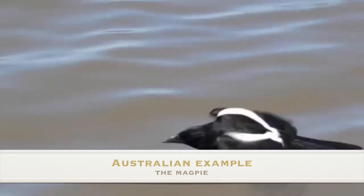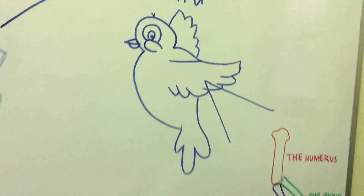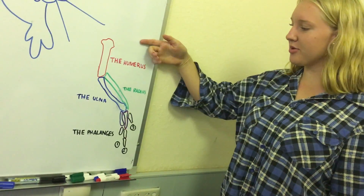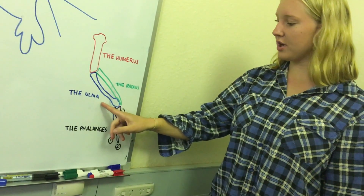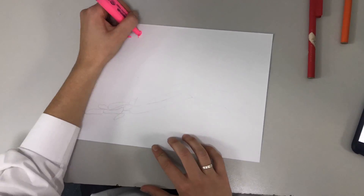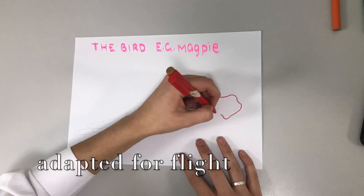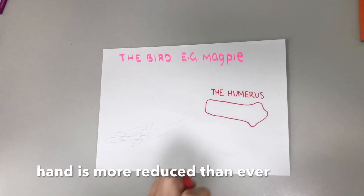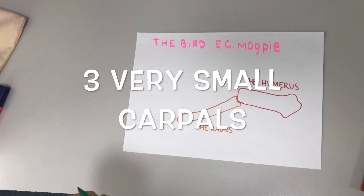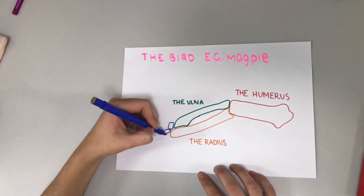The bird is another example of a species that has the pentadactyl limb. In the bird, the pentadactyl limb consists of the humerus, the radius, the ulna, and the phalanges, which are in three digits. In the bird, and in particular the Australian magpie, the forelimb became adapted for flight, and so the hand was more reduced than ever. There are still actually three carpals in most birds, but they are very small, and their main role is to provide attachment for things like feathers.